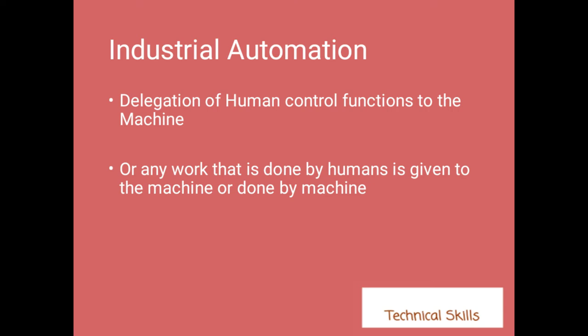First, let's discuss what is automation. In layman's language, automation is something that works automatically. As you can see on the slide, the first definition is: delegation of human control functions to machines. The second definition is: any work that is done by humans is given to the machine or done by the machine. Both are the same thing.